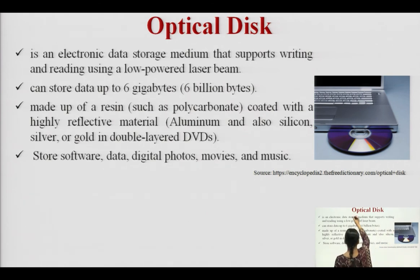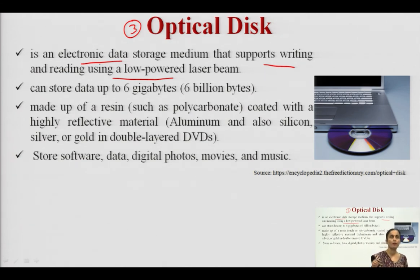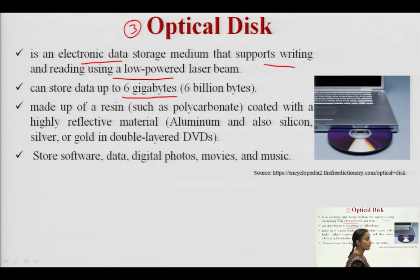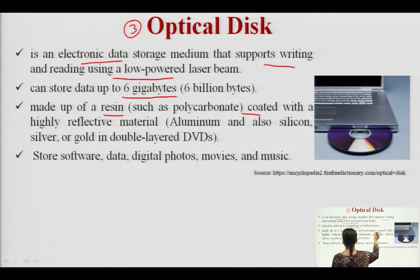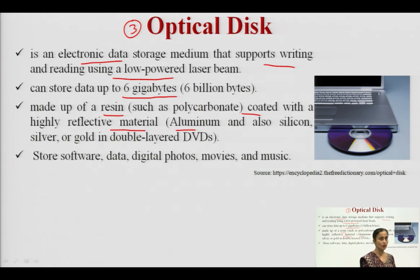The third device is the optical disc — an electronic data storage medium that supports both write and read operations using a low-powered laser beam. Where the laser beam pinpoints, the operation starts from that location. It can store up to 6 gigabytes (6 billion bytes) on an optical disc. It is made of a resin material such as polycarbonate, coated with a highly reflective material — aluminum, silicon, silver, or gold. For double-sided DVDs, silver and gold coatings are used. We can store software, data, digital photos, movies, and music on optical discs.